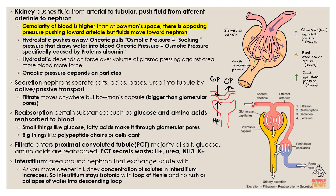When substances are reabsorbed, they go into other capillaries surrounding the nephron. Large molecules like polypeptide chains won't pass through the glomerular pores. After filtration, the filtrate enters the PCT where the majority of salt, glucose, and amino acids are reabsorbed. The PCT also secretes waste such as H⁺, urea, NH₃, and K⁺.